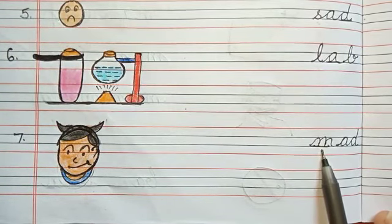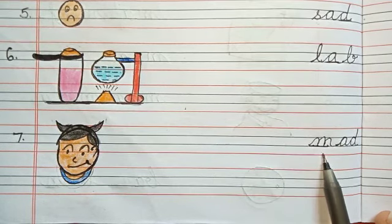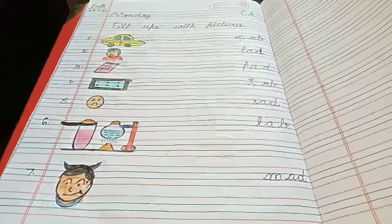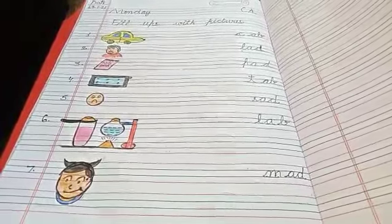Next. Ma. Phonic sound of M is ma, ma, ad, mad. Now, kids, you have to do a practice of this work. Bye, kids.